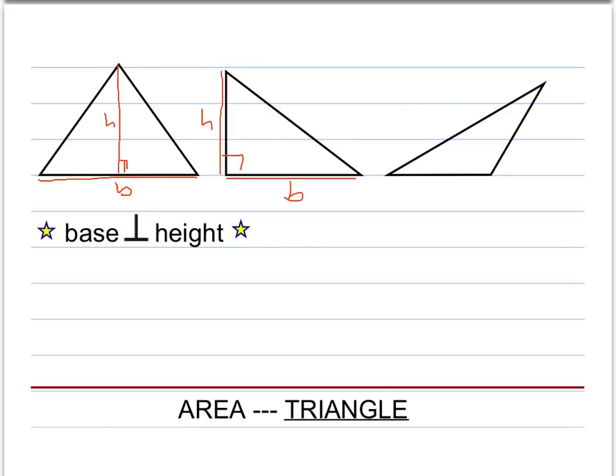And then in this last triangle, this obtuse triangle, if this is our base length, the height must still be perpendicular to the base. And so if we extend the base, we see that the height of the triangle would be this perpendicular distance.